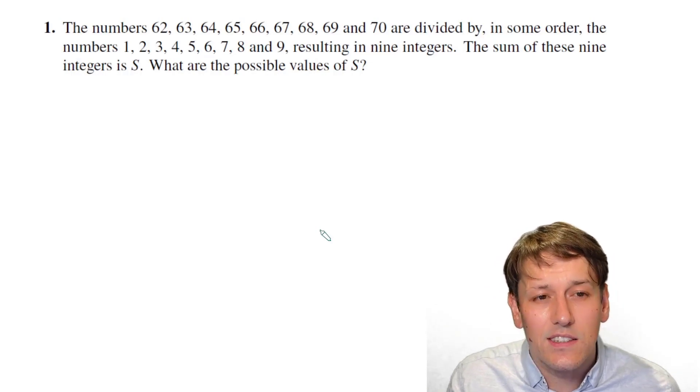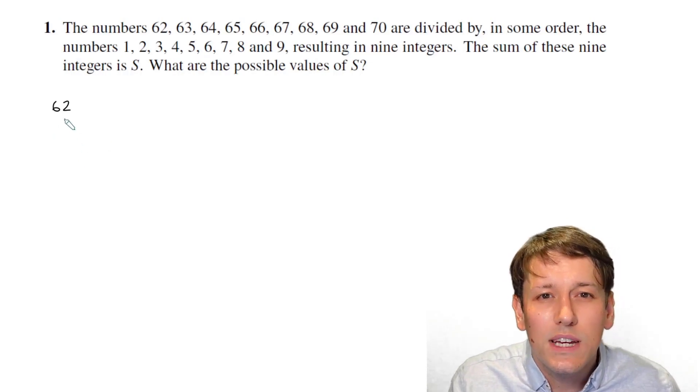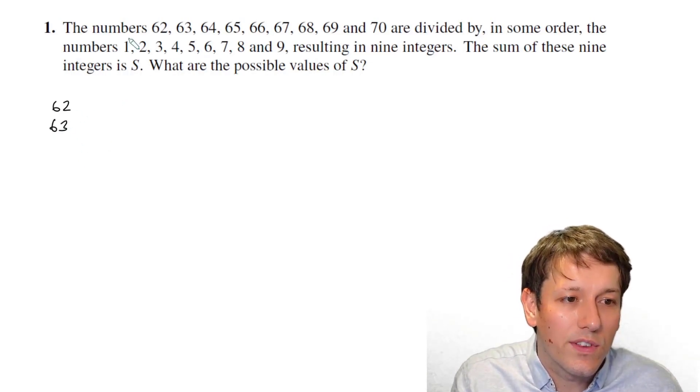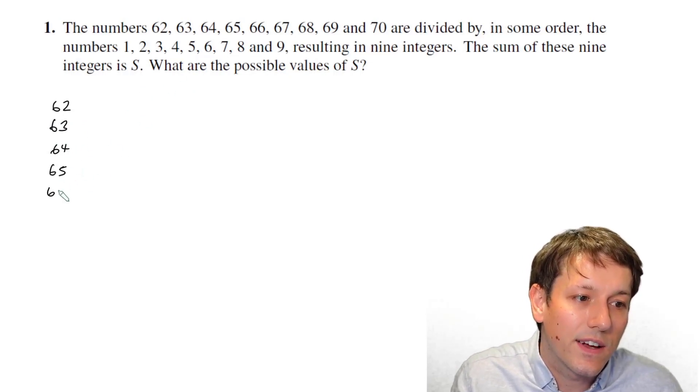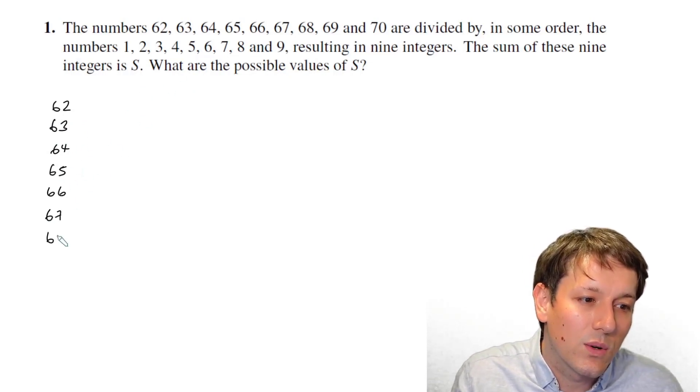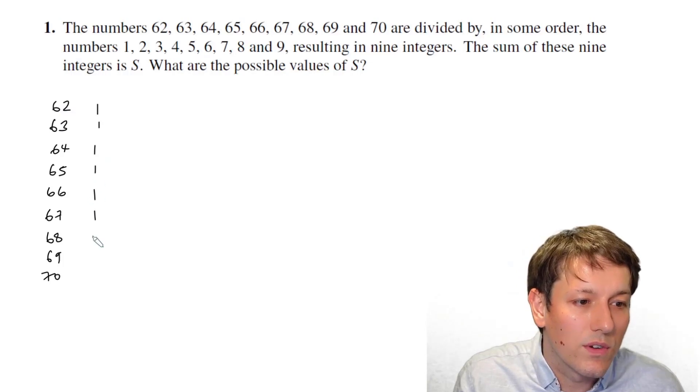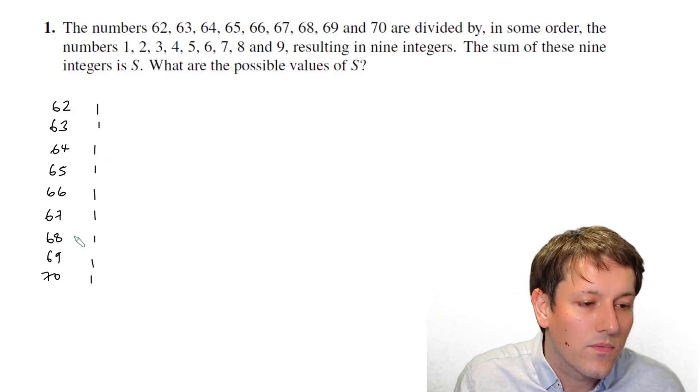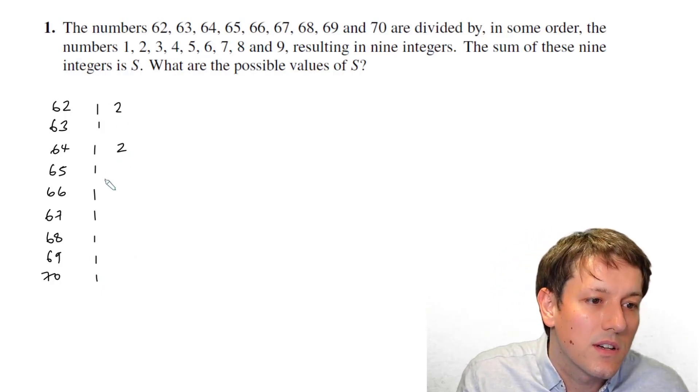It makes sense to start by listing the factors of the numbers 62 up to 70, but we don't really need to list all of the factors. We can just quite quickly list the numbers between 1 and 9 that are factors. So if I just write a quick list of these numbers, then well 1 is clearly a factor of all of the numbers. 1 is a factor of every number, and 2 is a factor of all the even numbers. So let's write 2s in here.